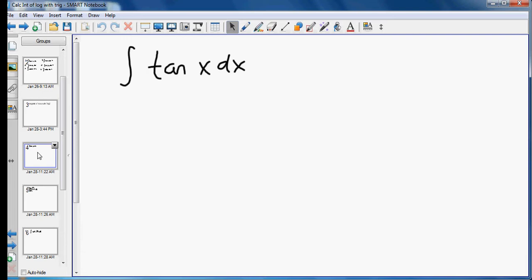So we have to think, in order to do it that way, what does tangent of x equal? Well if you recall, tangent of x is actually equal to sine of x over cosine of x. And if we change it to that form, then we could use u substitution.